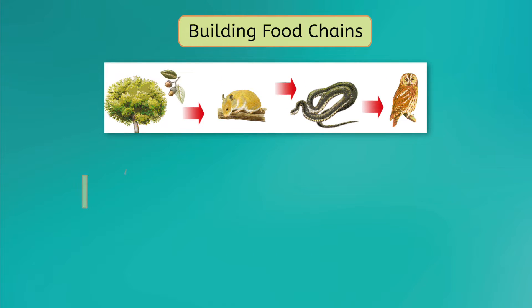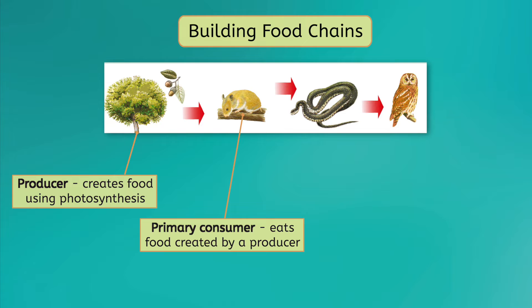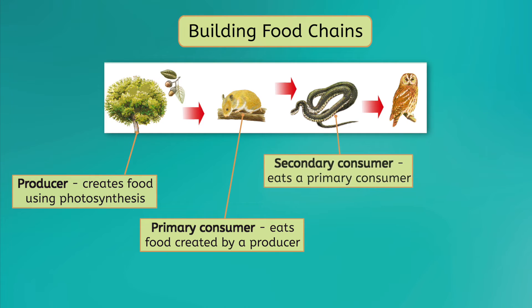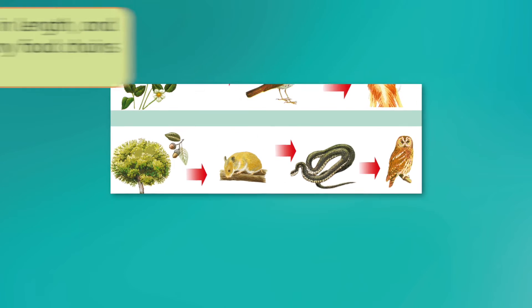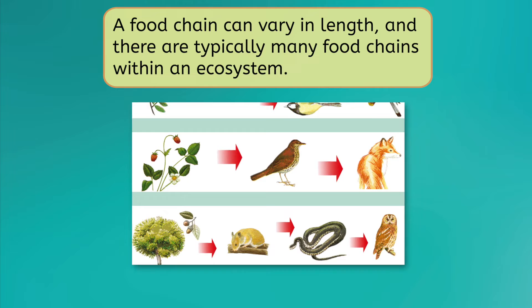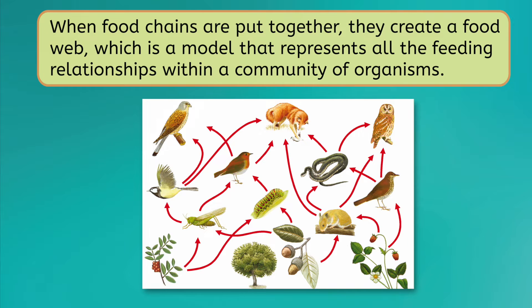Food chains start with a producer, such as an oak tree, that creates food using photosynthesis. From there, a primary consumer, such as a mouse, eats this food, moving the energy along the chain. The secondary consumer — a snake in this example — eats the primary consumer. A tertiary consumer eats the secondary consumer, and so on and so forth. A food chain can vary in length, and there are typically many food chains within an ecosystem. When food chains are put together, they create a food web, which is a model that represents all the feeding relationships within a community of organisms.